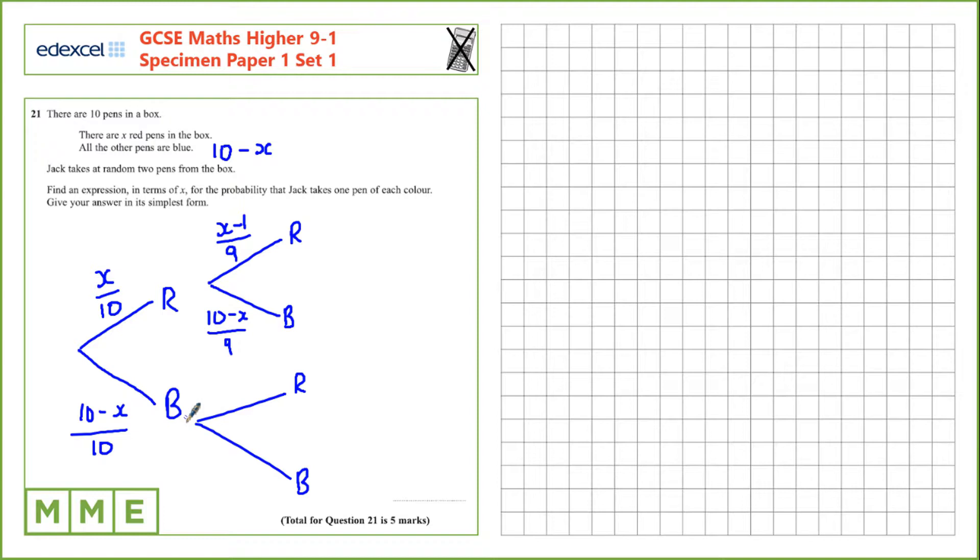In the case that blue was taken first, there's still x red pens out of a total of 9 pens. And in the case that blue was taken first and then blue is taken second, there are 9 pens in the box. Take away the red pens is the number of blue pens over 9.